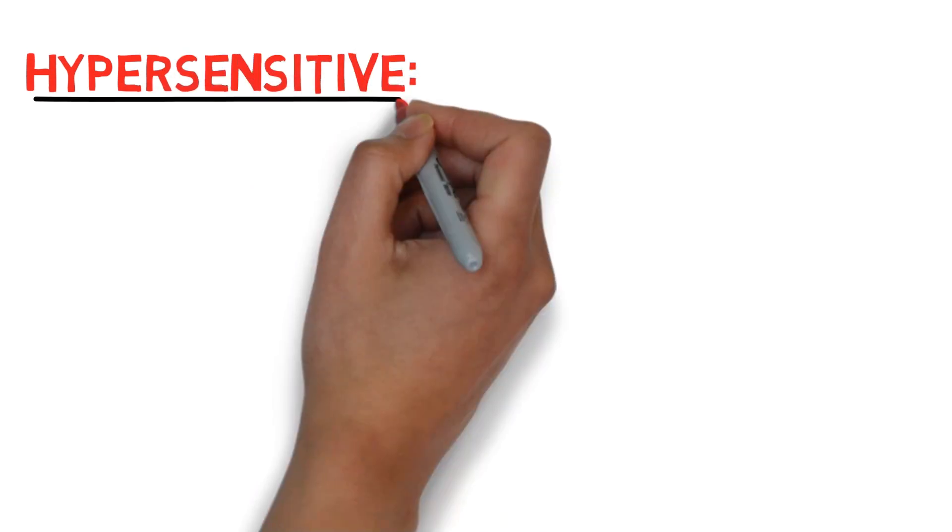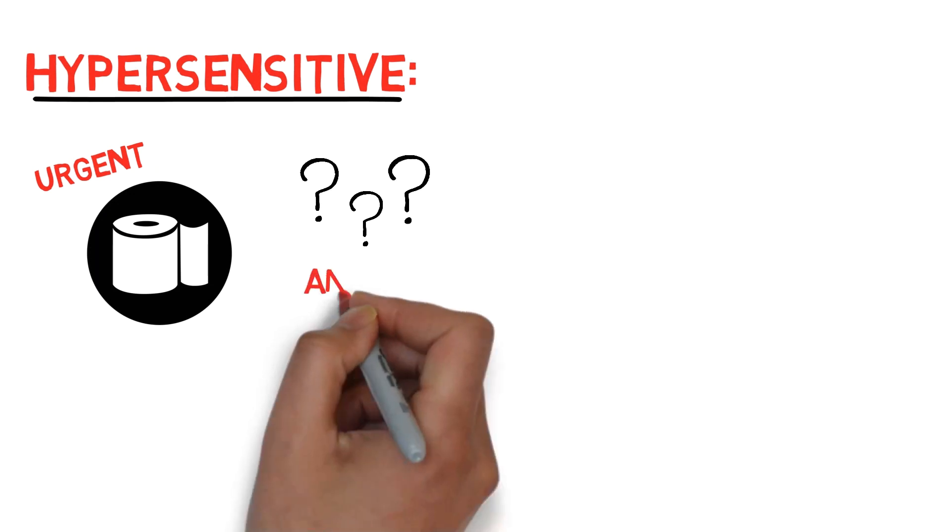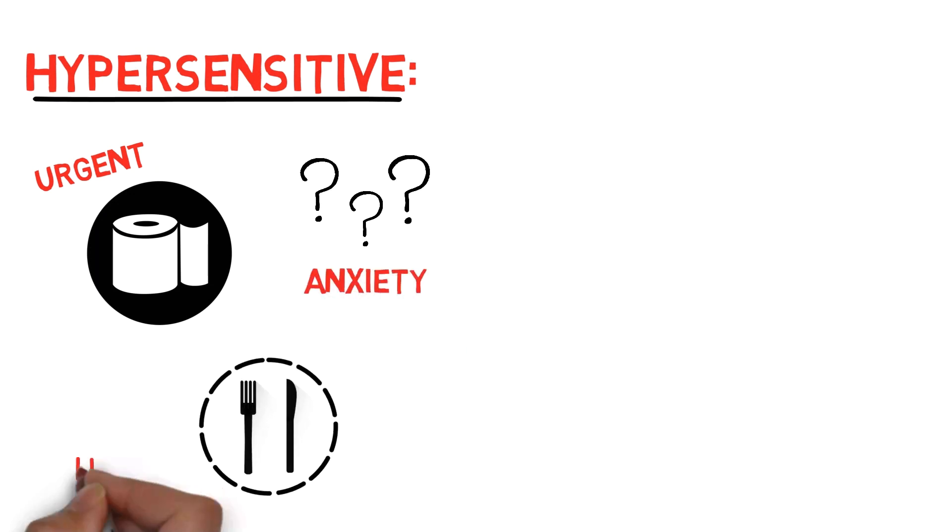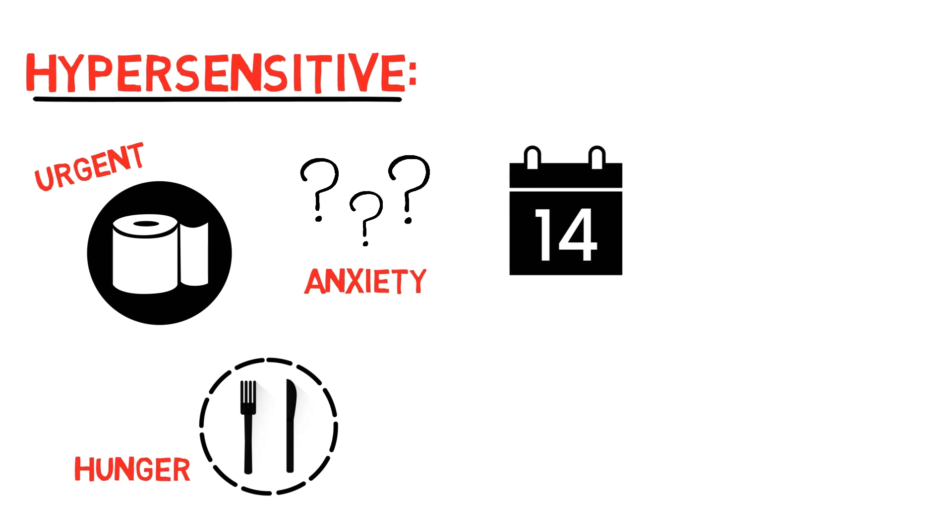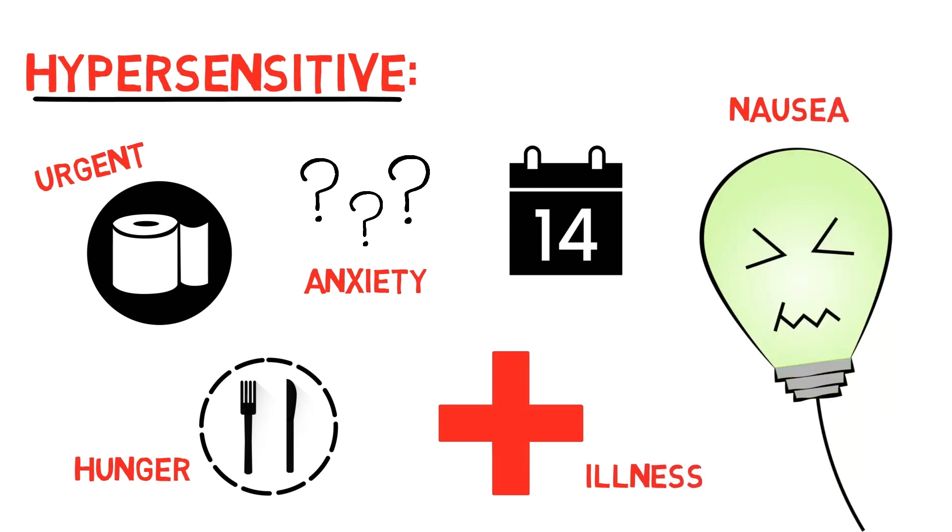If you're over-sensitive to it, you might feel a need to go to the toilet more often. You might be aware of subtle changes in the body and mistake this for anxiety. You might feel hungry often, periods could feel stronger, you might feel ill often and worry, and you might feel nausea and bloatedness more often.